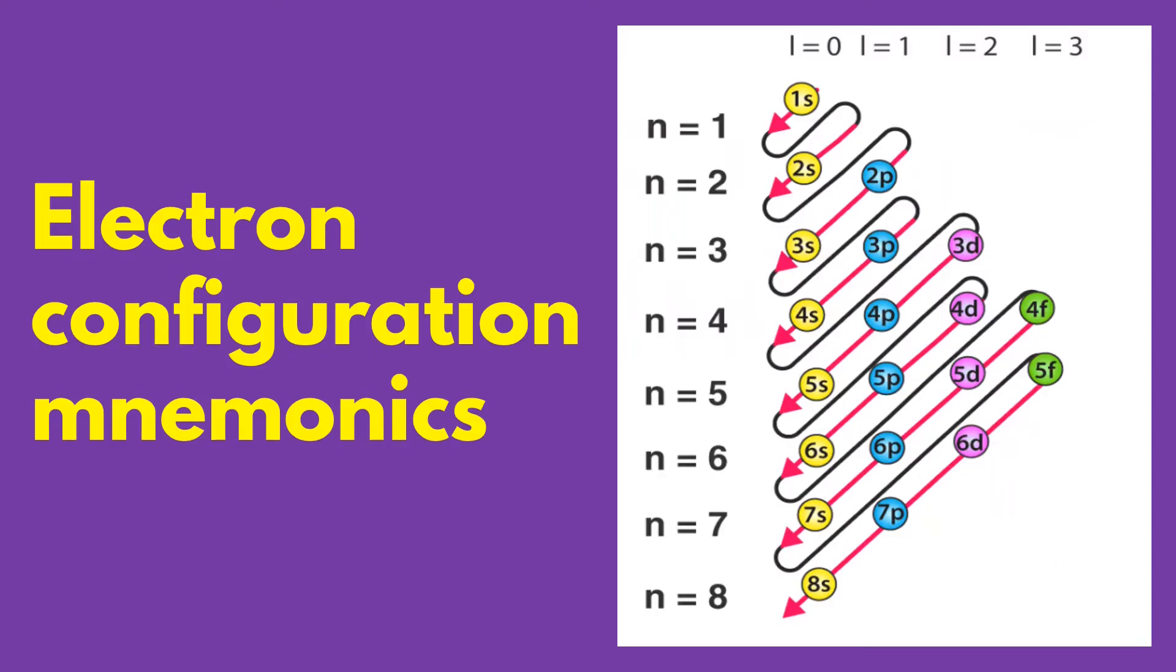Mnemonics for electron distribution include the orbital names S, P, D, and F, which stand for sharp, principal, diffuse, and fundamental. Electron configuration describes the way that electrons are distributed in the orbitals of a given molecule. This mnemonic can be used to easily determine the electron configuration of an element.